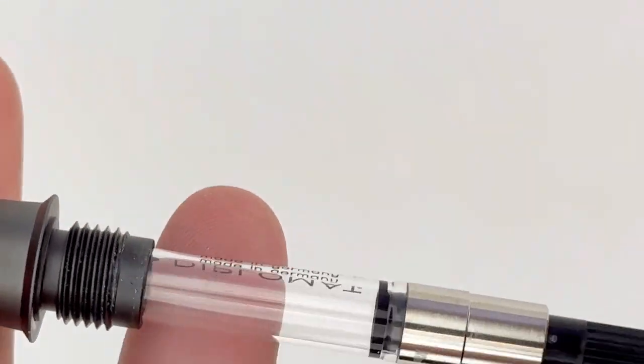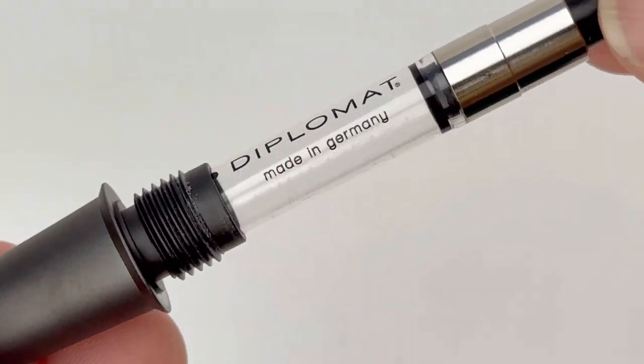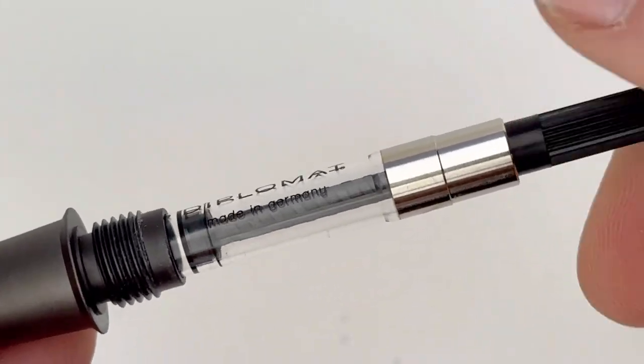The Diplomat Arrow is a cartridge converter fountain pen, and it comes with a branded converter already installed in the pen for you.